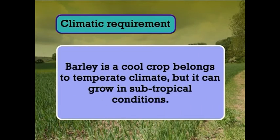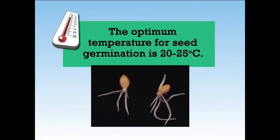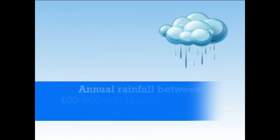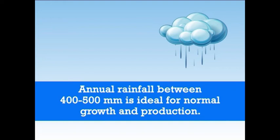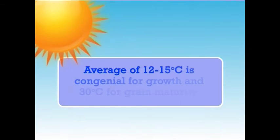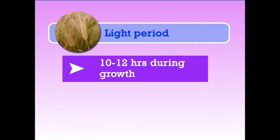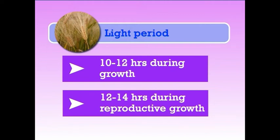Regarding climate: barley is a cool crop, belongs to temperate climate, but it can also grow in sub-tropical conditions. It cannot tolerate frost at any stage of growth, and an incidence of frost at flowering is highly detrimental for the yield. The optimum temperature for seed germination is 20 to 25 degrees Celsius. Annual rainfall between 400 to 500 mm is ideal for normal growth and production. Warm and damp climate is not suitable for barley production. Average of 12 to 15 degrees Celsius is congenial for growth and 30 degrees Celsius for grain maturity. Being a long-day plant, a light period of 10 to 12 hours during growth and 12 to 14 hours during reproductive growth is ideal.